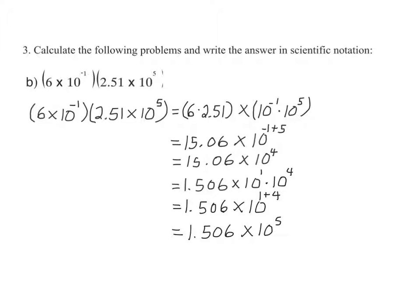Which gives us 1.506 times 10 to the fifth, which is now in scientific notation. Therefore, 6 times 10 to the negative 1 times 2.51 times 10 to the fifth is equal to 1.506 times 10 to the fifth.